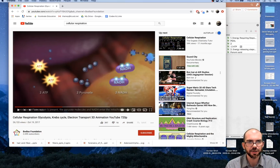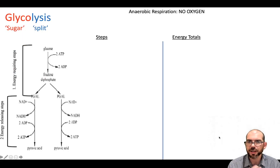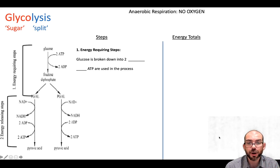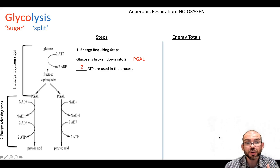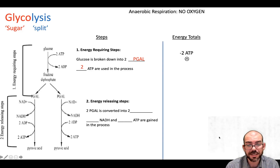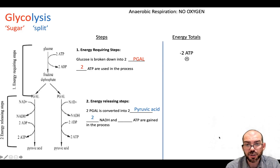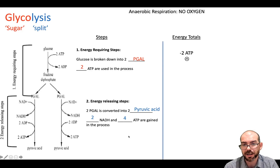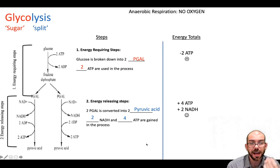So here you can see a diagram of those two steps: the energy-requiring or investing steps and the energy-releasing steps. First, glucose was broken down into two molecules known as PGAL, also referred to as fructose diphosphate. Two ATPs had to be spent in the process, so we've already lost two ATP — we're in debt by negative two. By adding those phosphates, we destabilize the sugar and can move on to the energy-releasing steps. In the energy-releasing steps, those two PGALs are converted into two pyruvic acid. We gain two NADHs — money in the bank — and we get a total of four ATP generated, two from each PGAL.